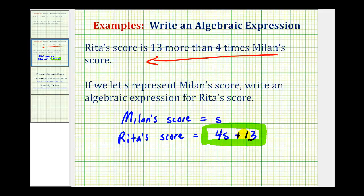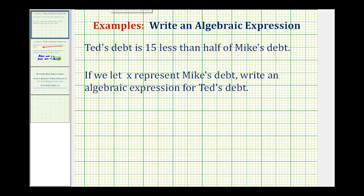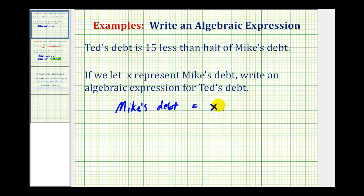Let's take a look at a second example. Ted's debt is fifteen less than half of Mike's debt. If we let x represent Mike's debt, we want to write an expression for Ted's debt. We'll start by defining Mike's debt as equal to x dollars, and we want an expression for Ted's debt, which is fifteen less than half of Mike's debt.